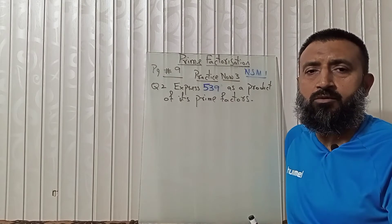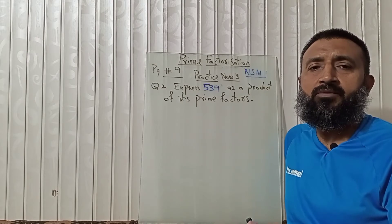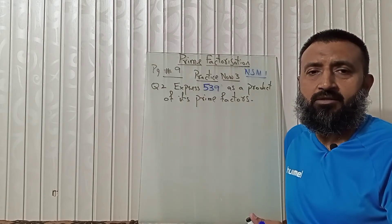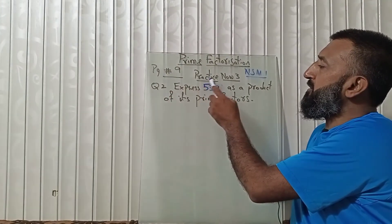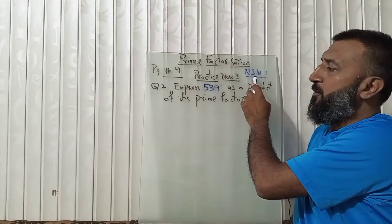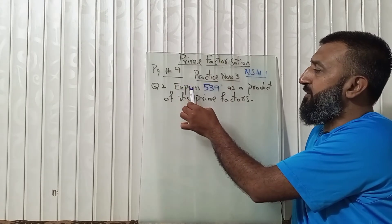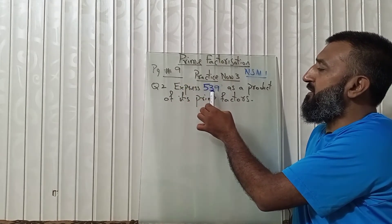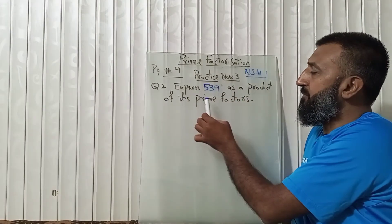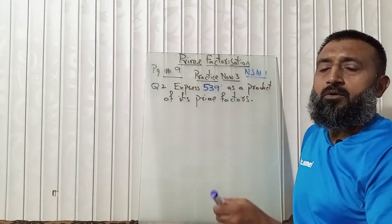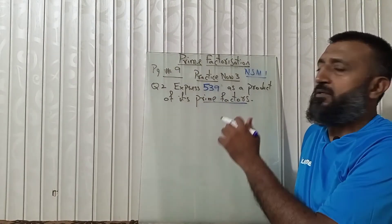Now you have both concepts: the simple way to describe prime factorization and the standard concept of the fundamental theorem of arithmetic. We are going to start with page number nine and practice now three, as given in the book NSM 1. Question two is basically for prime factorization — it says express 539 as a product, meaning multiplication form, of its prime factors. Prime factors means all the prime numbers being utilized to factorize the number 539.